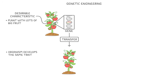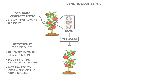Effectively, what we're doing is modifying the organism's genome by adding a new, helpful gene, and so we can call the organism genetically modified, or GM. We're not just limited to organisms of the same species though. We can also use the genes of one species to genetically modify organisms of another species.